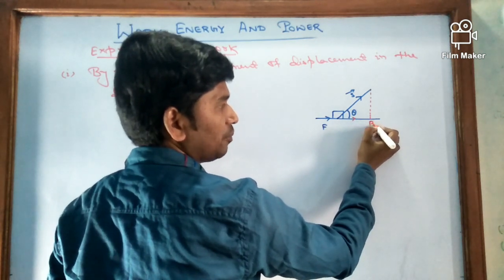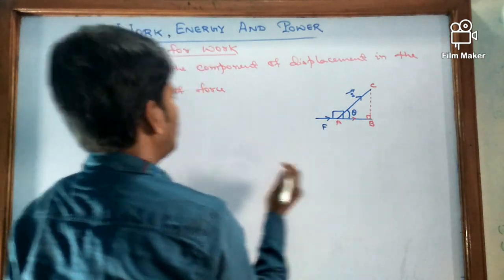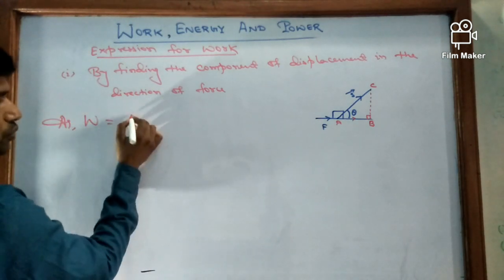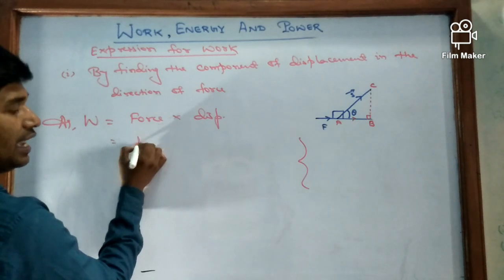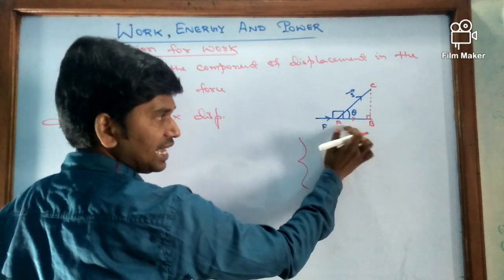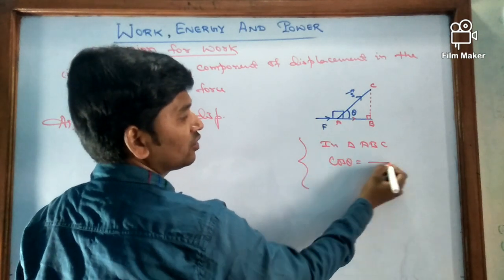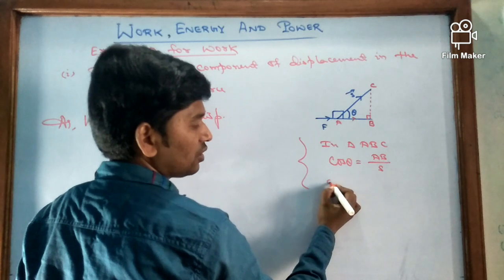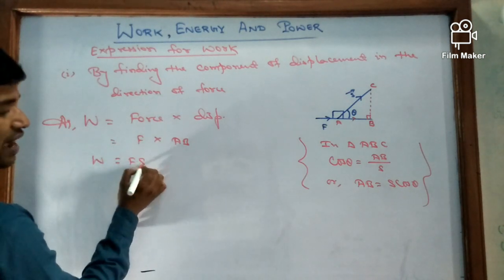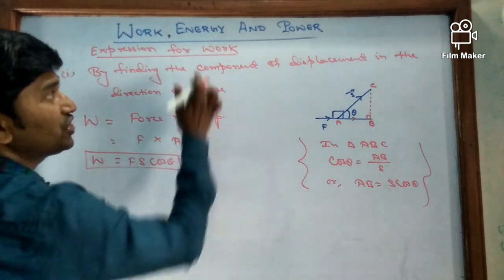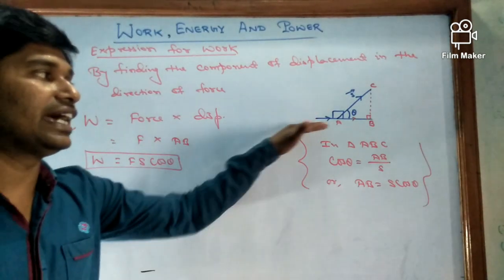Say the points are A, B, and C. Now in the right triangle, work is equal to force into displacement. The applied force is F, and for displacement we will not take S directly. In triangle ABC, cos θ = base / hypotenuse = AB / S, so we can write AB = S cos θ. Therefore we get: work W = F S cos θ. This is the expression for work, derived by finding the component of displacement in the direction of force. This formula is used when force and displacement are not in the same direction and there is an angle θ between them.